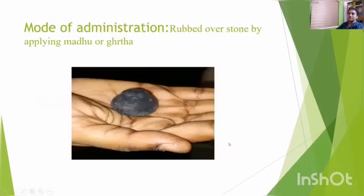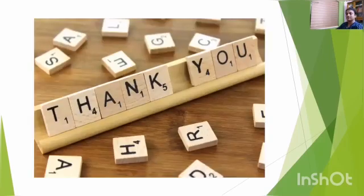Coming to the mode of administration — the Pottali should be rubbed over a stone and administered by applying Madhu or Ghrita. Different types of Pathya-Apathya are also detailed, with a detailed description mentioned in our classics. Here I have explained a brief introduction about Pottali Kalpana. Thank you.